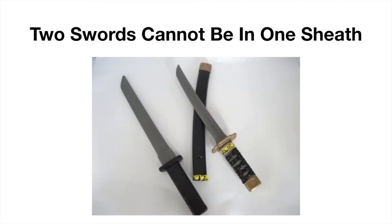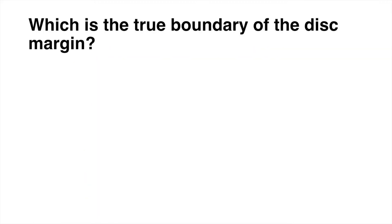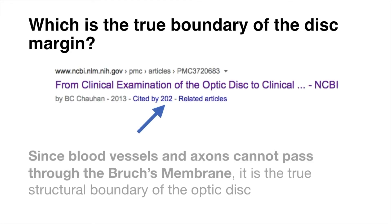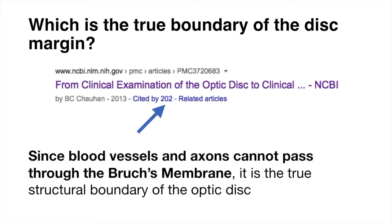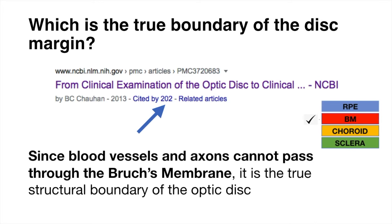Two swords cannot be in a single sheath. So which is the true boundary of the disc margin? Since blood vessels and axons cannot pass through Bruch's membrane, the termination of it is the true boundary, putting all speculations to rest.